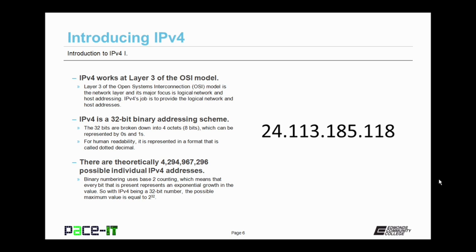There are theoretically 4,294,967,296 possible individual IPv4 addresses. Binary numbering uses base 2 counting, which means that every bit that is present represents an exponential growth in the value that is being represented. So with IPv4 being a 32-bit number, the possible maximum value is equal to 2 to the 32nd power, which is why there are over 4 billion possible IPv4 addresses.